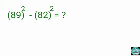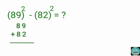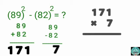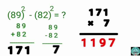89 squared minus 82 squared. Add 89 and 82: 89 plus 82 equals 171. Subtract 82 from 89: 89 minus 82 equals 7. Then multiply 171 by 7. 171 times 7 equals 1,197.